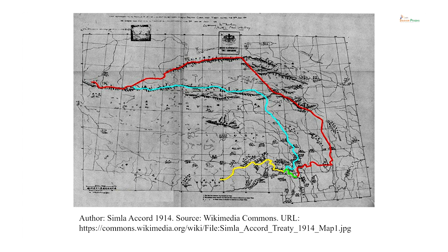That boundary is known as the McMahon Line. The Chinese government refused to sign this particular treaty. But at that time, in 1914, the Tibetan government was de facto independent. The yellow line here is the McMahon Line — it goes into the green line also. North of this yellow line is the area which was called outer Tibet.